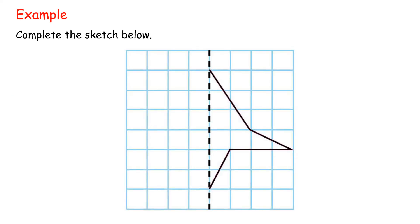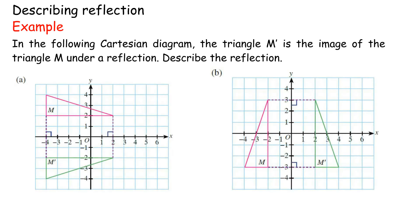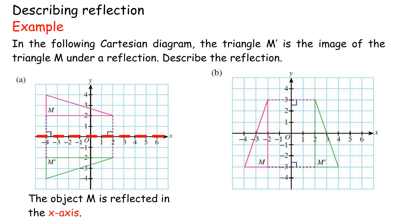Example: Complete the sketch below. In the following Cartesian diagram, triangle M' is the image of triangle M under a reflection. Describe the reflection. Solution: A. The object M is reflected in the x-axis. B. The object M is reflected in the y-axis.